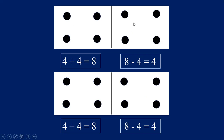And our last fact family for the number eight is a double. Four plus four equals eight. Eight minus four equals four. And because this is a double, the equations are the same — but we could do it again: four plus four equals eight. Eight minus four equals four. Good job! These are our fact families for the number eight.